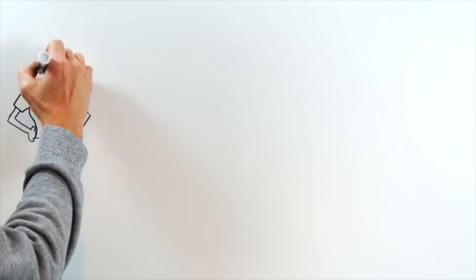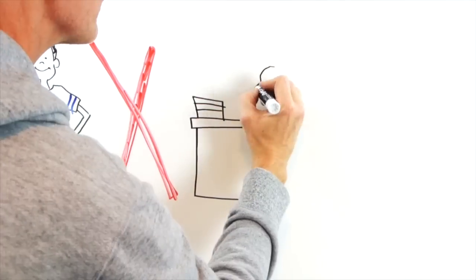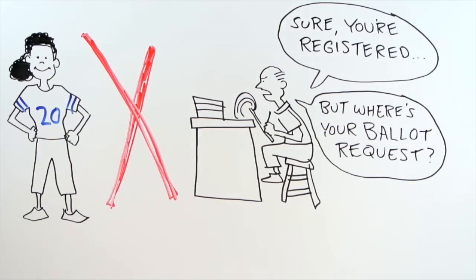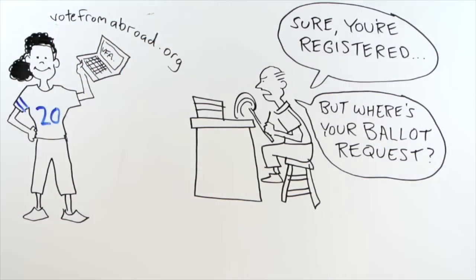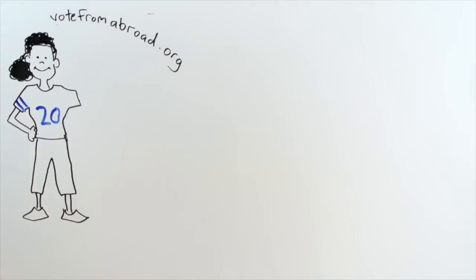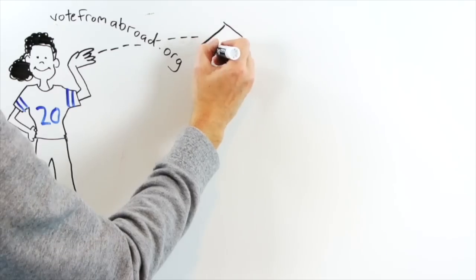Game time! And this citizen wants to vote, but blocked! She lives abroad and has to request a new ballot every year. So she takes the game online at votefromabroad.org, where she fills in the form and sends it off electronically with only five minutes off the clock.